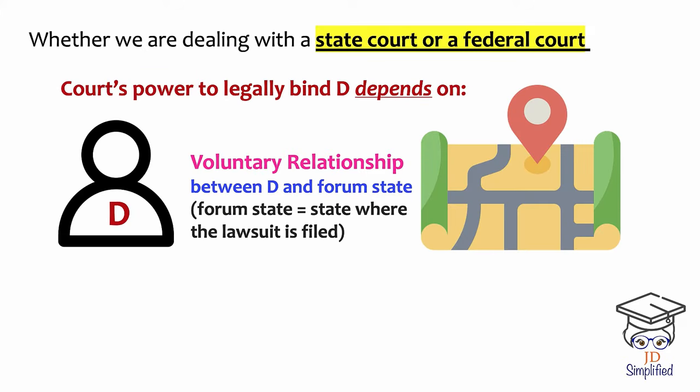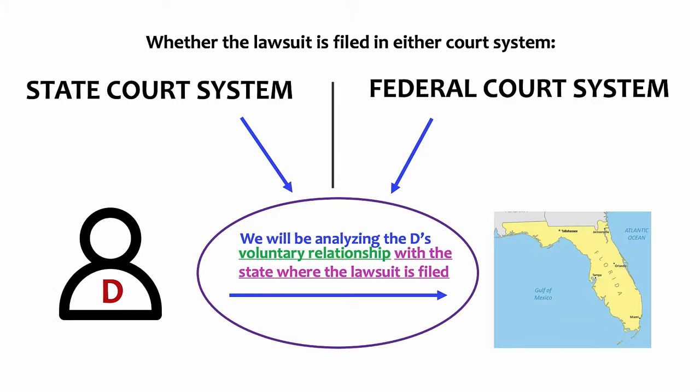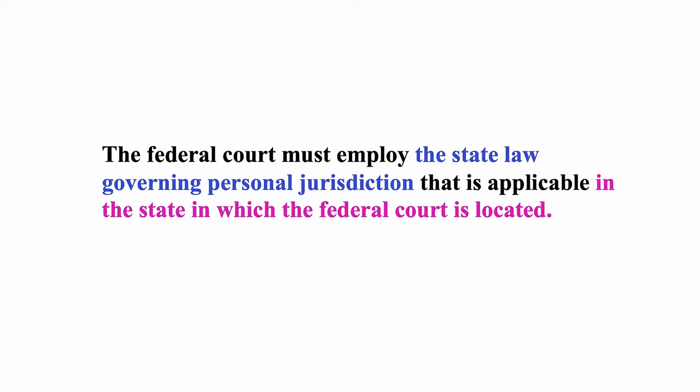The US has more than one court system. Whether we're dealing with a state court or a federal court, a court's power to legally bind a defendant to its decision depends on the relationship between the defendant and the forum state — the state where the lawsuit is filed. This means that a Florida state court and a federal court located in the state of Florida will follow the same personal jurisdiction rules. The federal court must employ the state law governing personal jurisdiction that is applicable in the state in which the federal court is located.